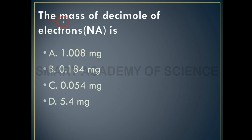Today we are going to solve an exercise of chemistry data. The moles of a decimole of electrons in Avogadro's number is — we will solve for decimole of electrons.